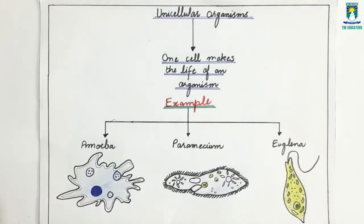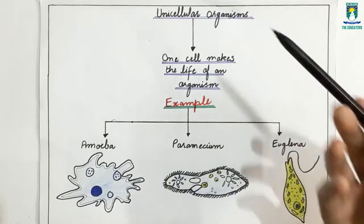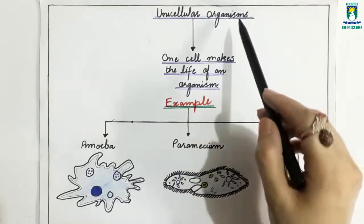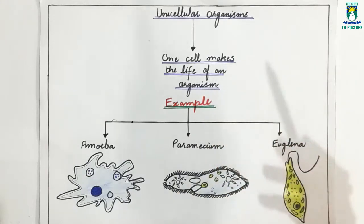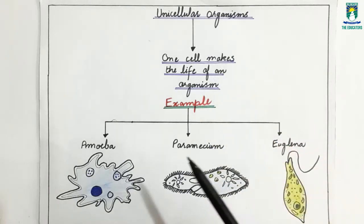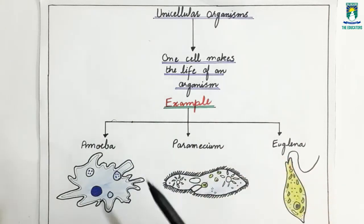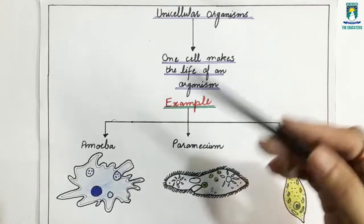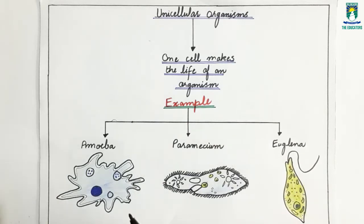Now we will discuss unicellular organisms. What are unicellular organisms? As the name indicates, these organisms are made up of a single cell. Only one cell makes the life of an organism, and all the life activities and all the functions are carried out by that only one cell.